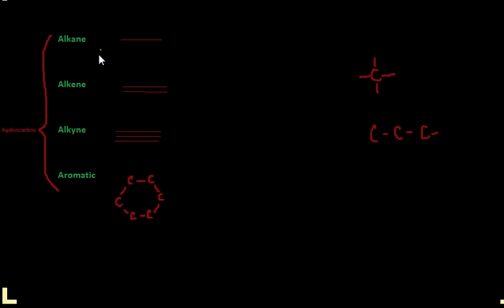And then what makes them separate from that is, first off, alkanes are all single bonds. Alkenes are all double bonds. Alkynes are all triple bonds. And aromatic compounds, of course, I think it's obvious they're all single bonds, but they form a ring like this.